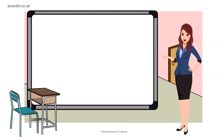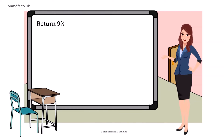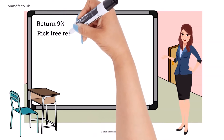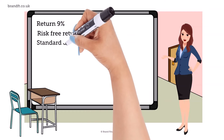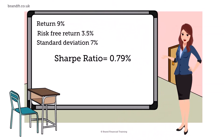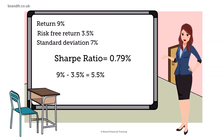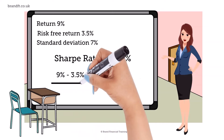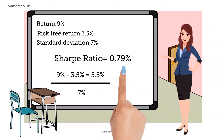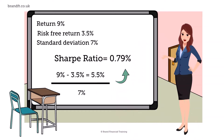For example, if a portfolio has a return of 9%, the risk-free return is 3.5%, and the standard deviation of the portfolio is 7%, the Sharpe Ratio is 0.79. To arrive at the answer, we take the return of 9% and subtract the risk-free return of 3.5% to give 5.5%. We then divide this by the standard deviation of the portfolio of 7% to give the answer of 0.79, rounded up.